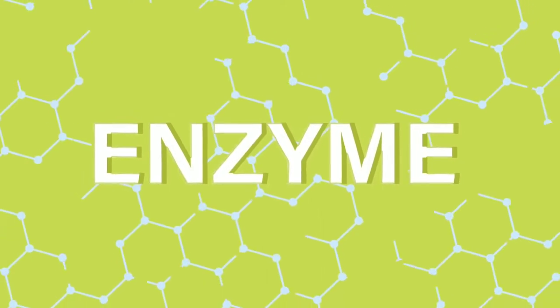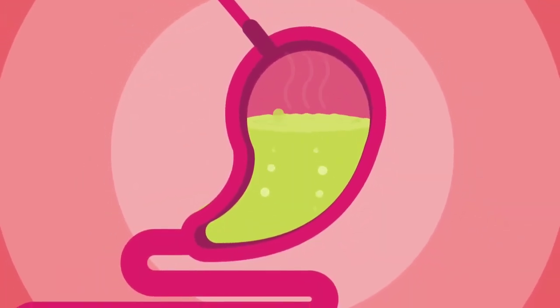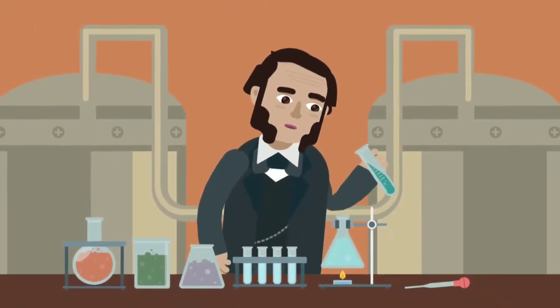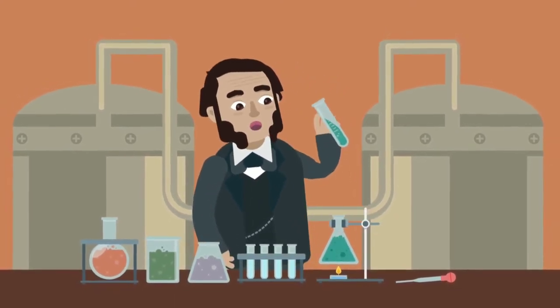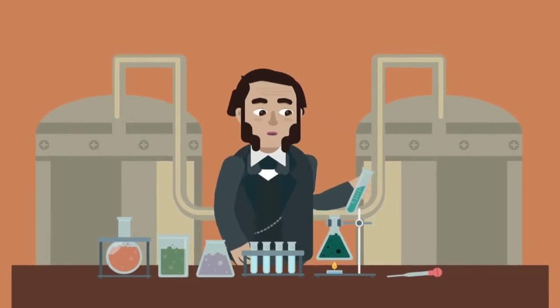Enzymes. The human body is a product of different chemical reactions and processes. But what controls these reactions? In 1833, a French chemist, Anselm Payen, was the first to discover the vital force that drove these reactions and named it enzyme.